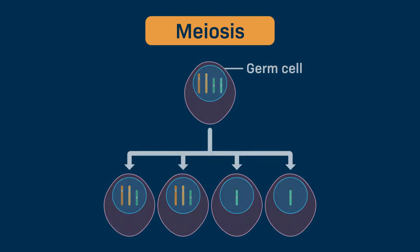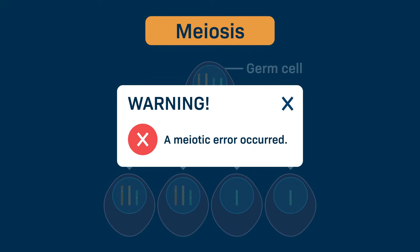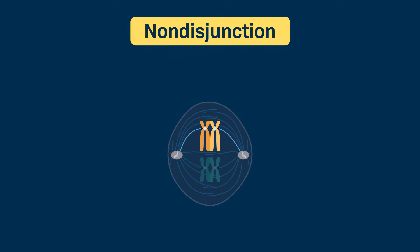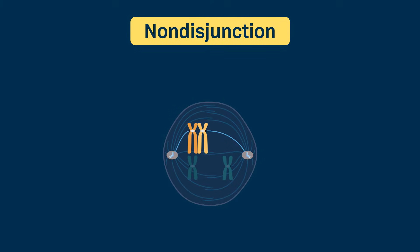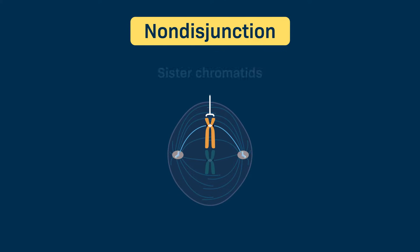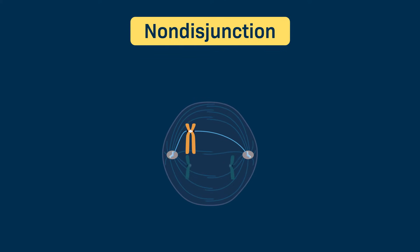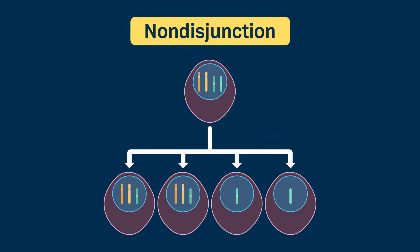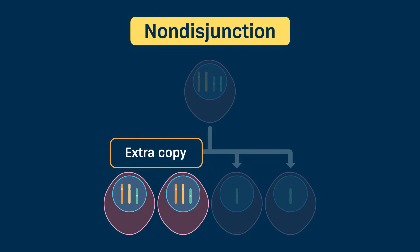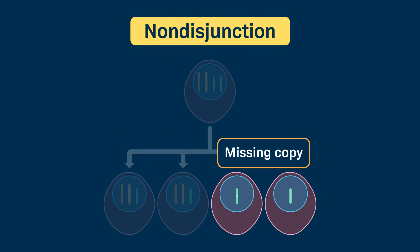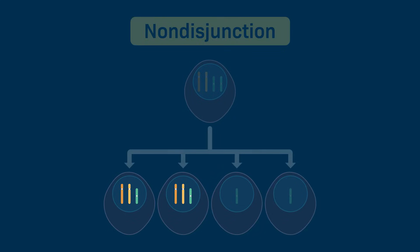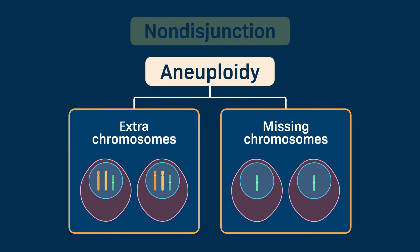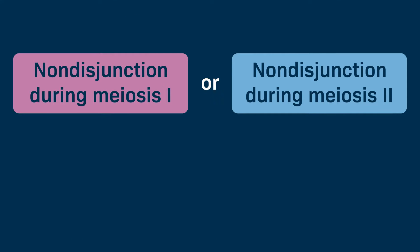During meiotic division in germ cells, errors can sometimes occur. One such error is called non-disjunction. Non-disjunction occurs when a pair of homologous chromosomes don't separate properly during meiosis 1, or when sister chromatids don't separate properly during meiosis 2. Non-disjunction can result in some cells having an extra copy of a given chromosome while other cells will be missing a copy. An increase or decrease in the normal number of chromosomes in a cell is referred to as aneuploidy.